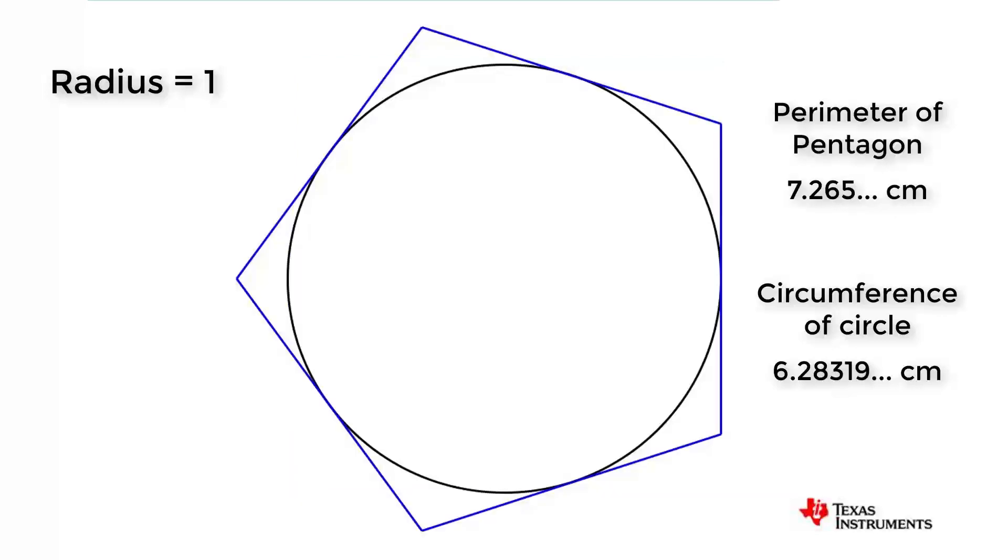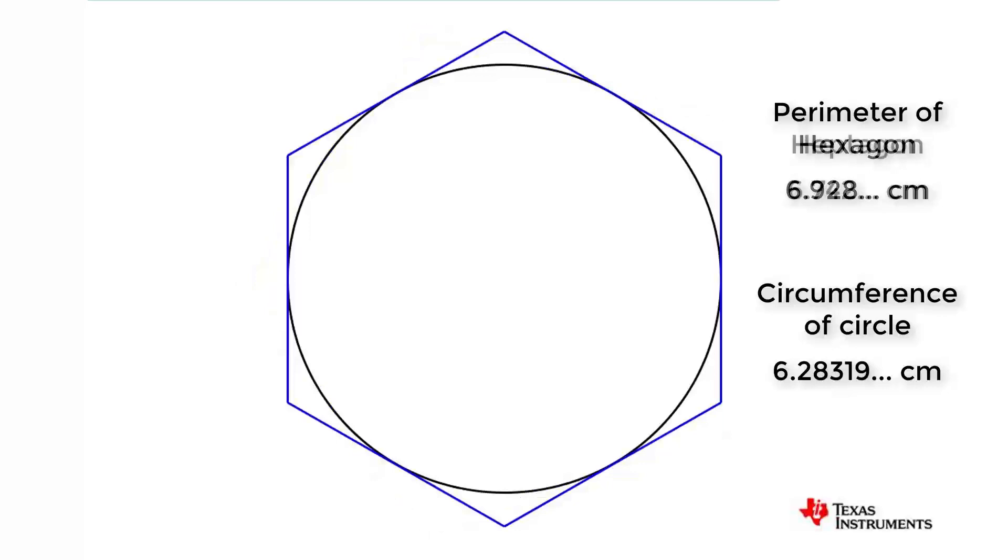A pentagon would give us a slightly better approximation. Still not great, but it's an improvement. A hexagon. Heptagon.